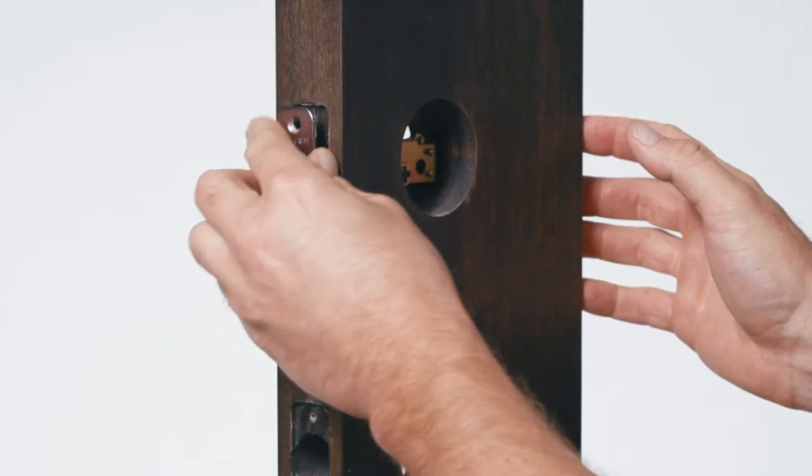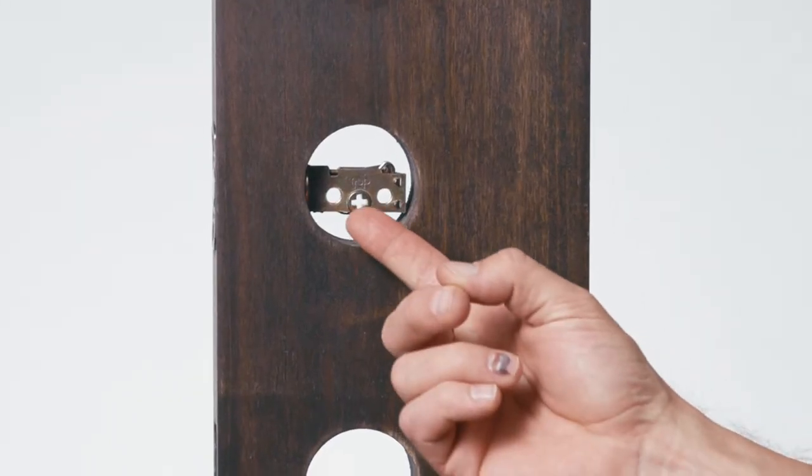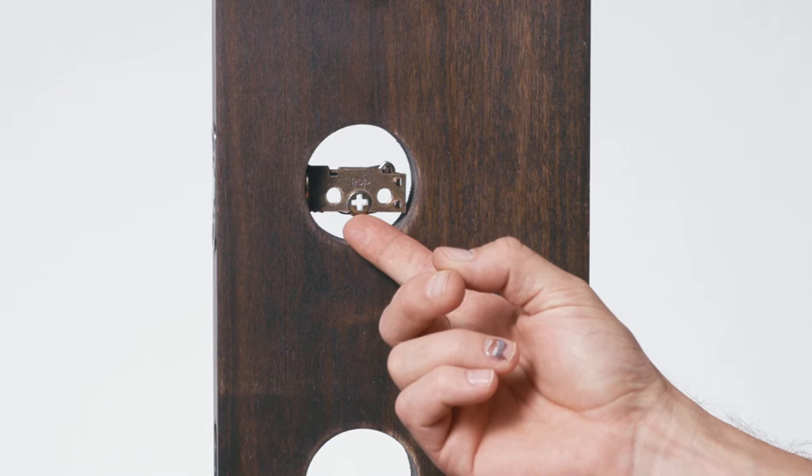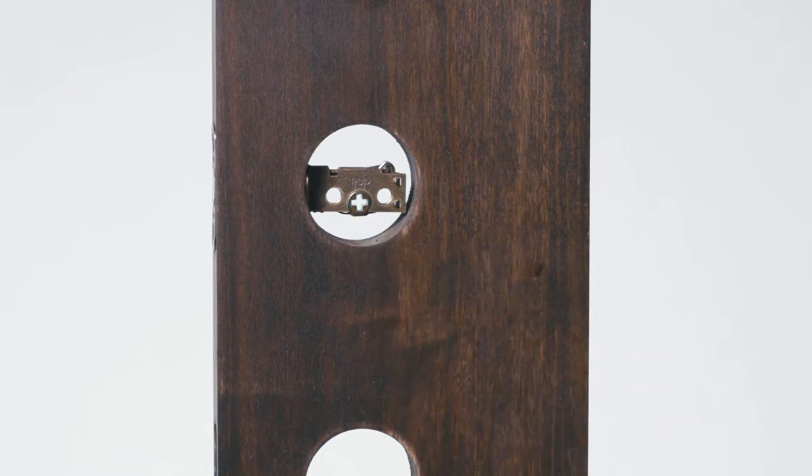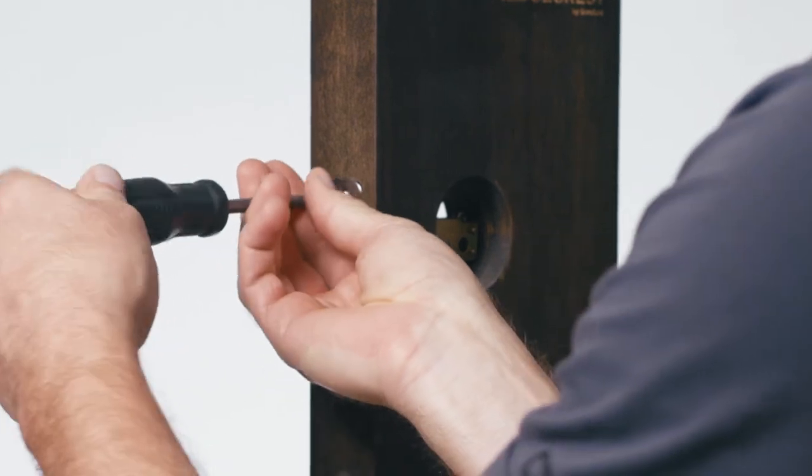Now install the deadbolt latch into the upper hole. Verify that the arrow is pointed in the up direction. Make sure that the crosshairs in the latch are towards the bottom of the latch and attach to the door using the supplied wood screws.